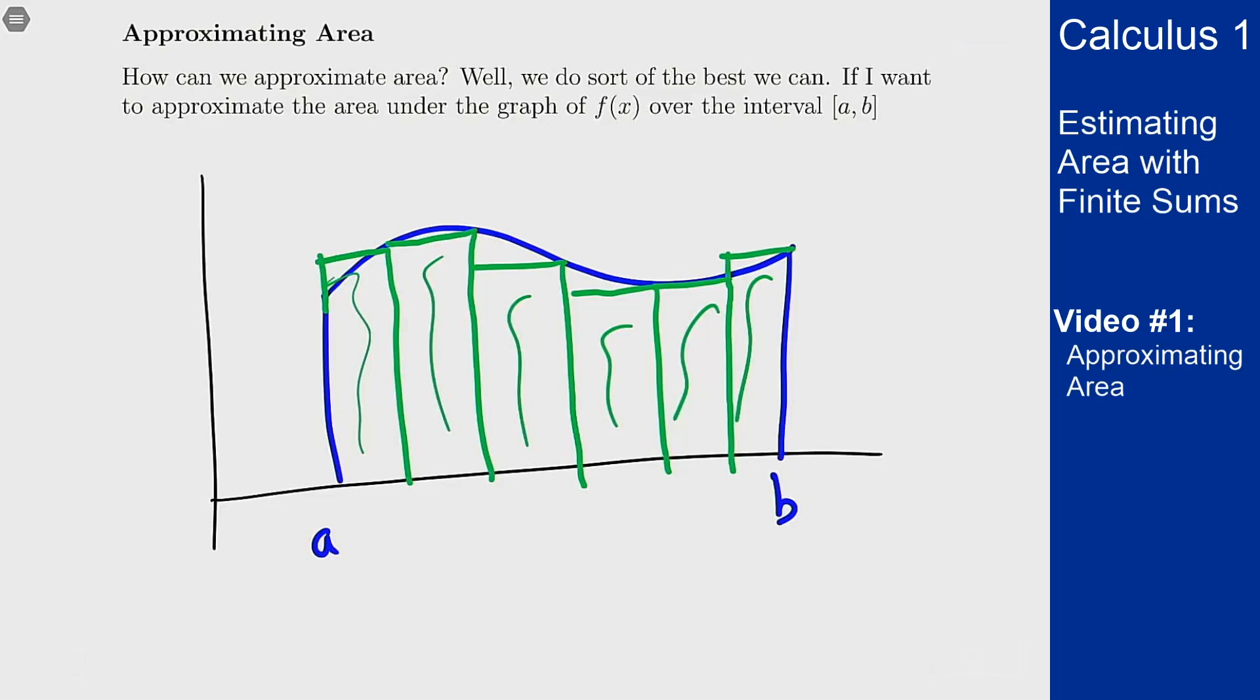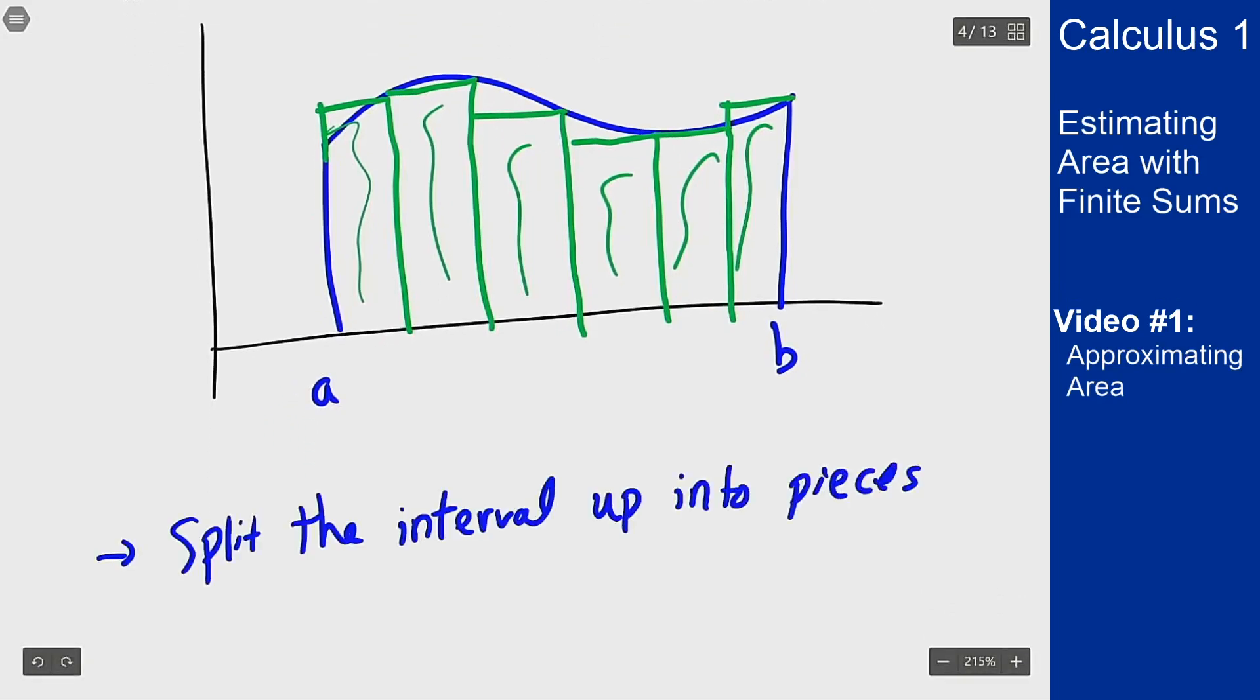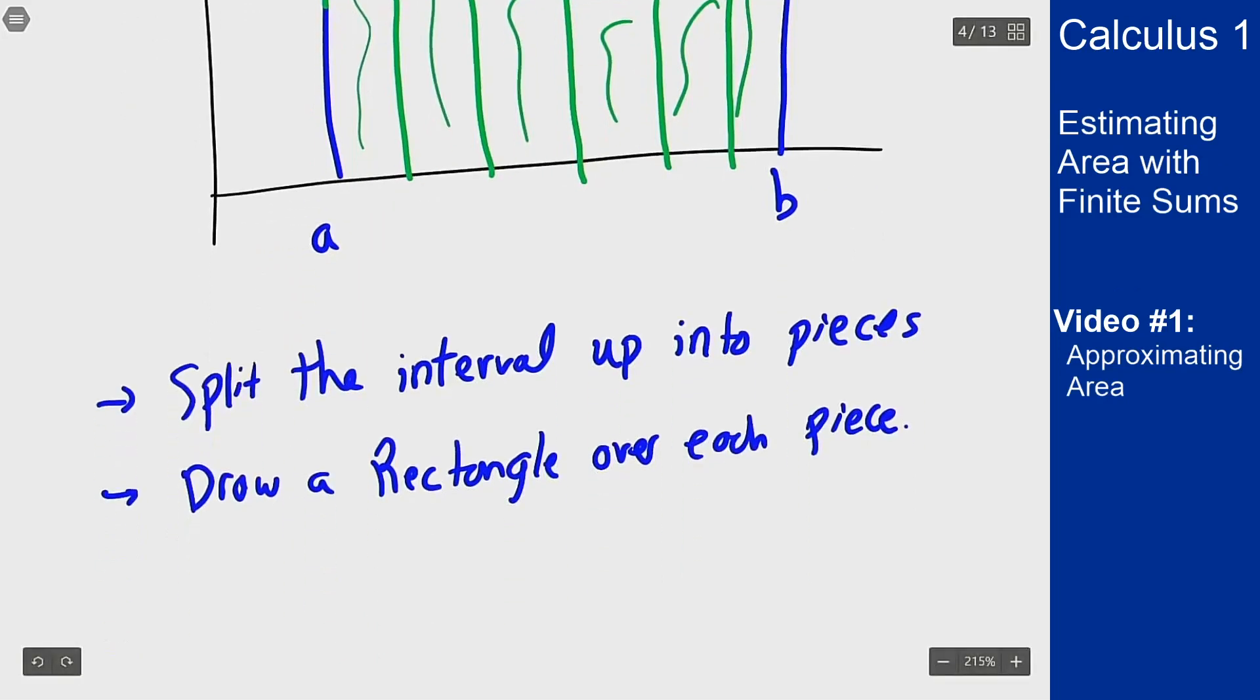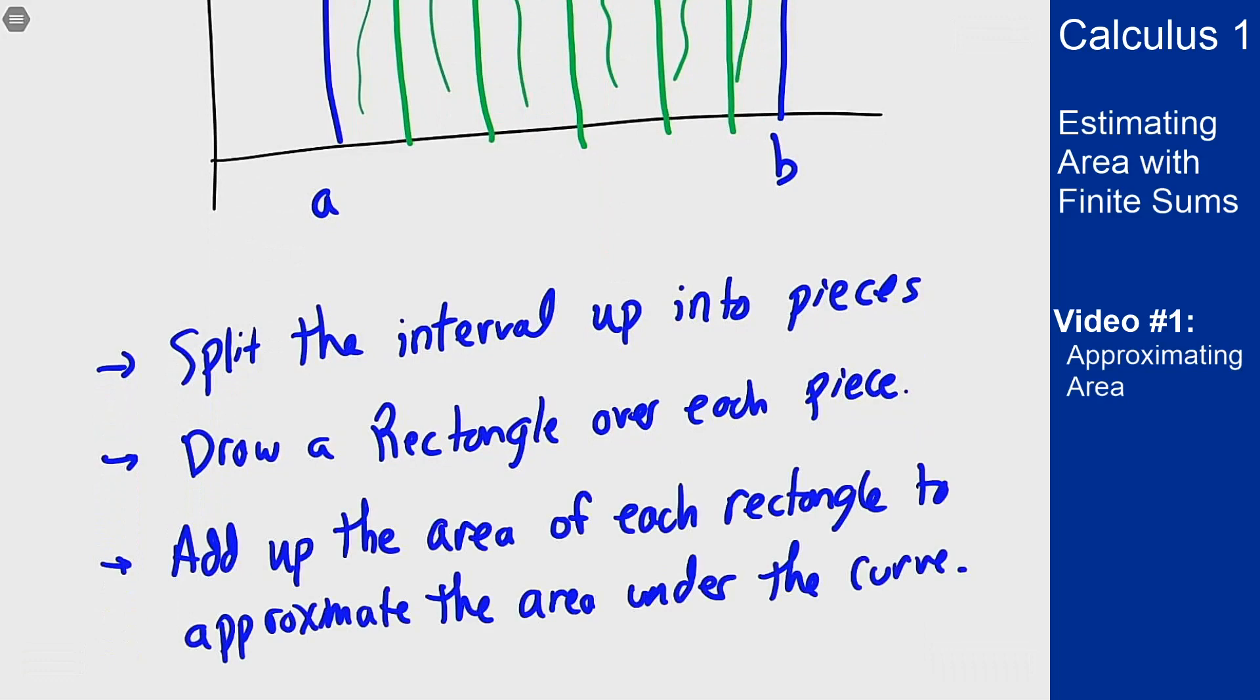The goal is split this up into pieces and then draw a rectangle over each piece and then add up the areas of each rectangle to find an approximation of the area under the curve. And this gives us a way to at least approximate the area under this curve whenever we need to find it.